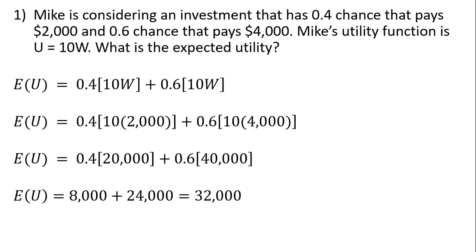This is in utility units, not dollars. Let's look at the expected value of this investment. The expected value is 0.4 times $2,000 plus 0.6 times $4,000, which equals $3,200.